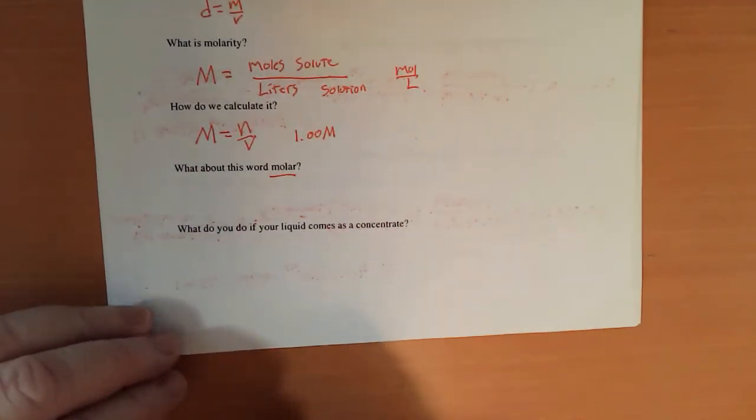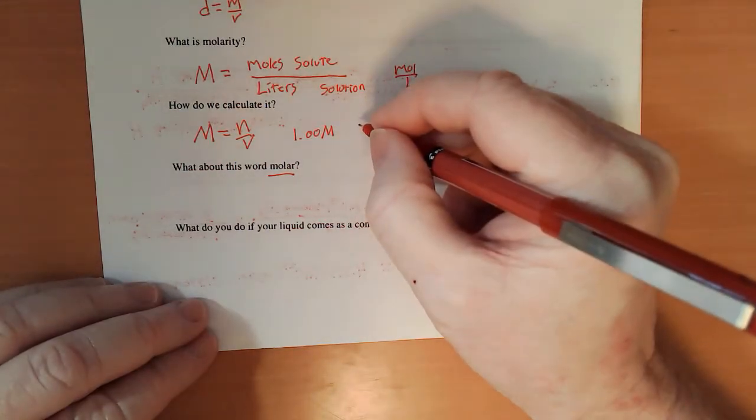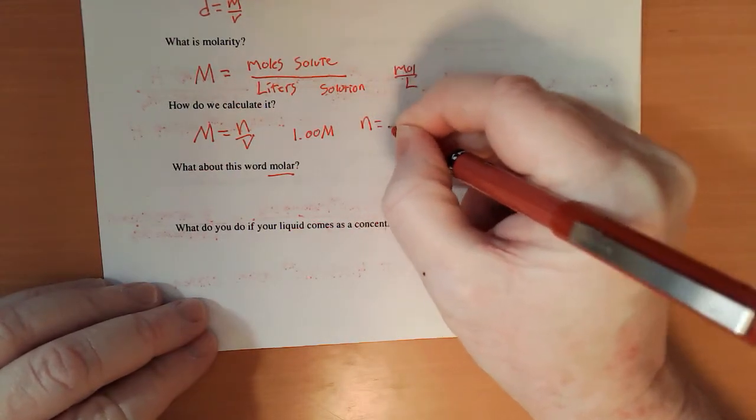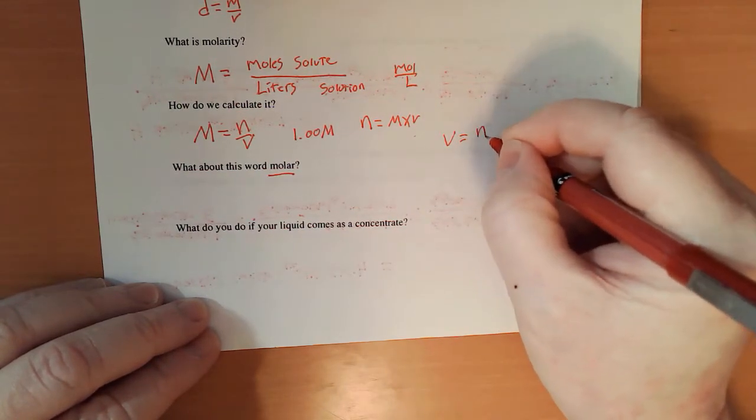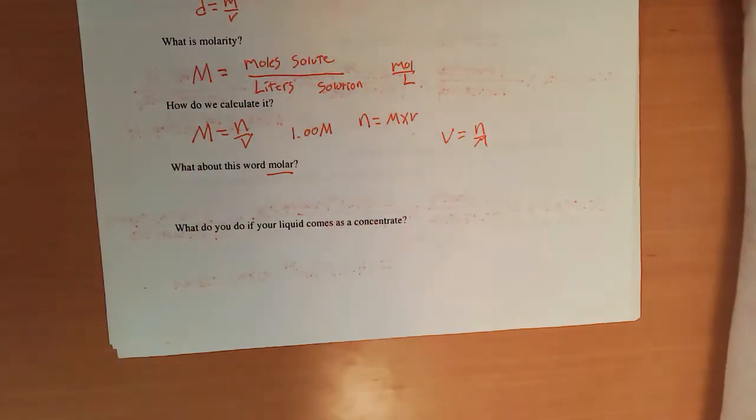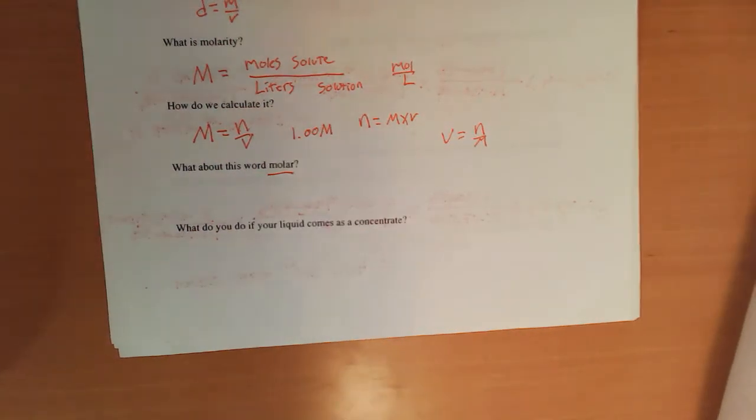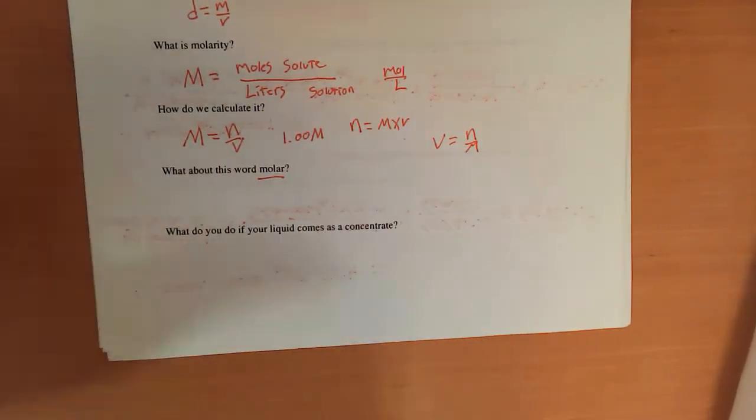Now often when we are trying to do this, we rearrange the equation. Moles equals molarity times volume, or volume equals moles divided by molarity. There's no need for you to go and memorize all three versions of that. What's going to happen here is that you know this one, you solve for the others using algebra.